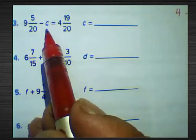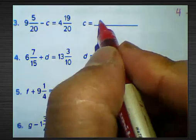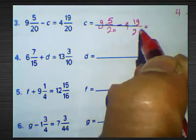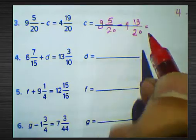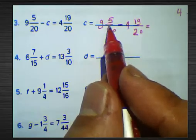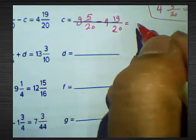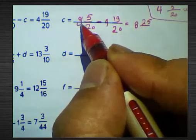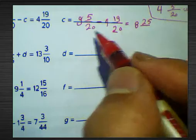Question number three: 9 and 5 over 20 subtract by c equals 4 and 19 over 20. Find the difference: 9 and 5 over 20 subtract by 4 and 19 over 20. Since 5 subtract by 19 we can't do, we borrow 1 from 9, making it 8, and 5 over 20 becomes 25 over 20 — because 1 equals 20 over 20, plus 5 over 20 equals 25 over 20.